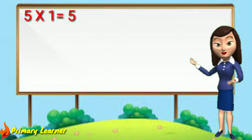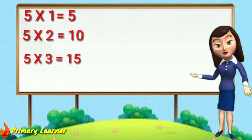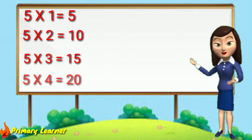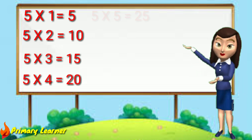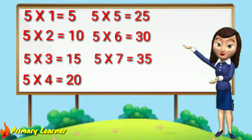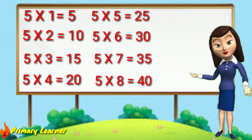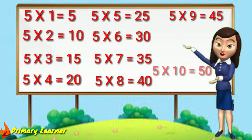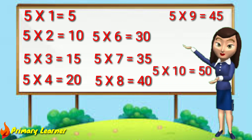5 ones are 5, 5 twos are 10, 5 threes are 15, 5 fours are 20, 5 fives are 25, 5 sixes are 30, 5 sevens are 35, 5 eights are 40, 5 nines are 45, 5 tens are 50.